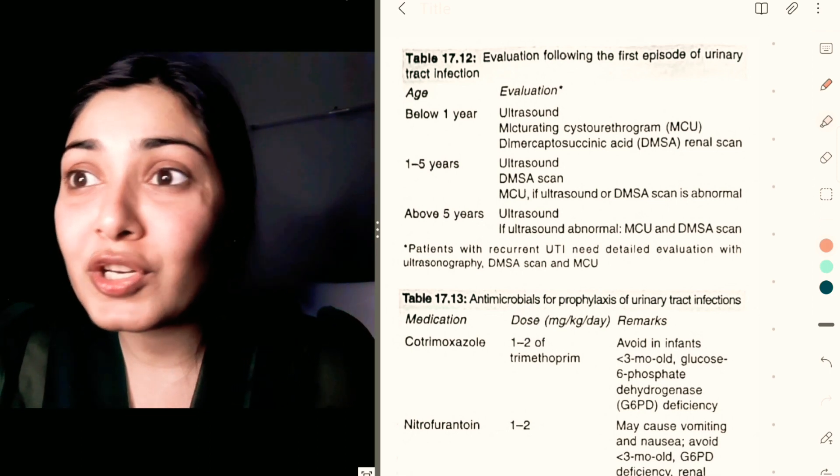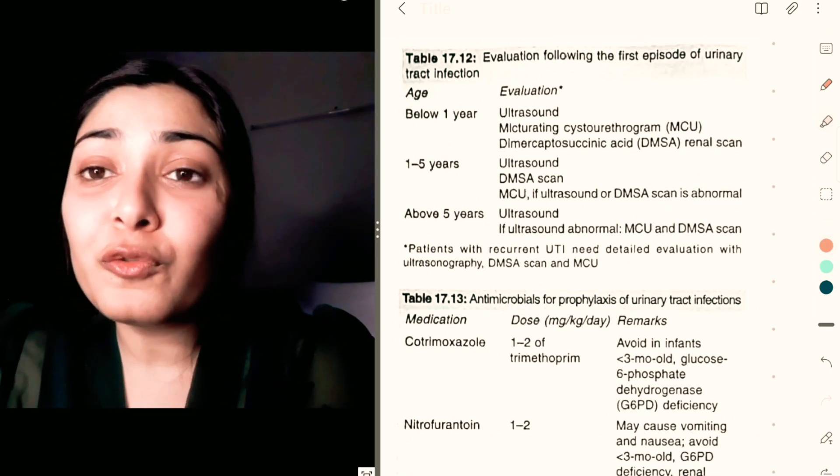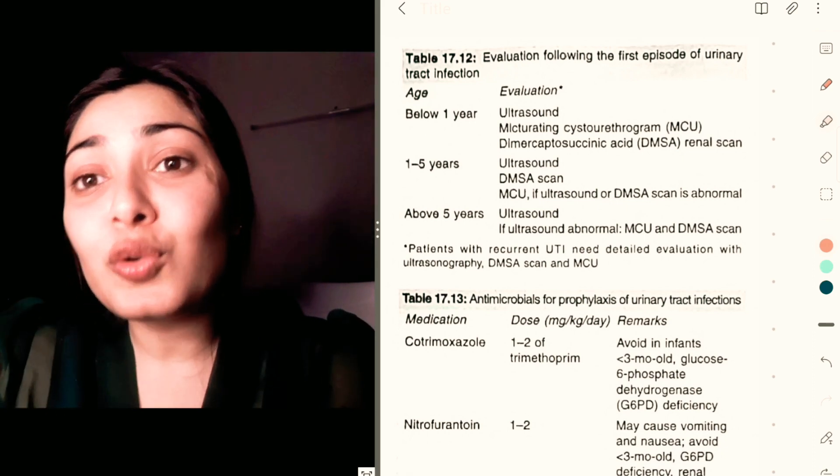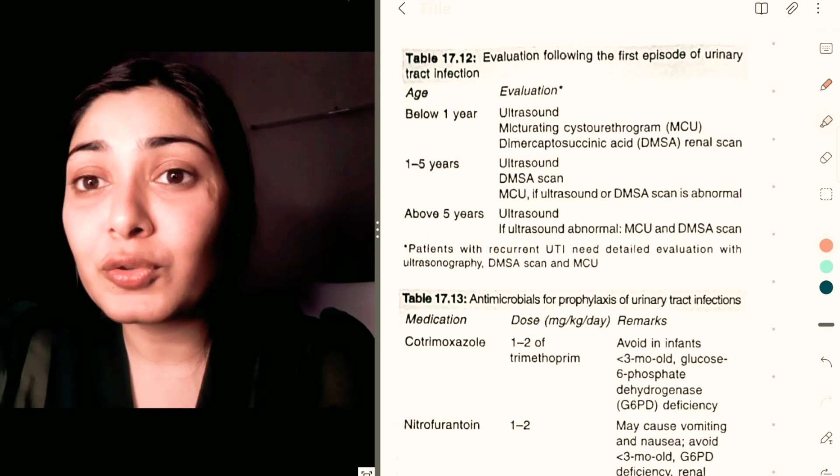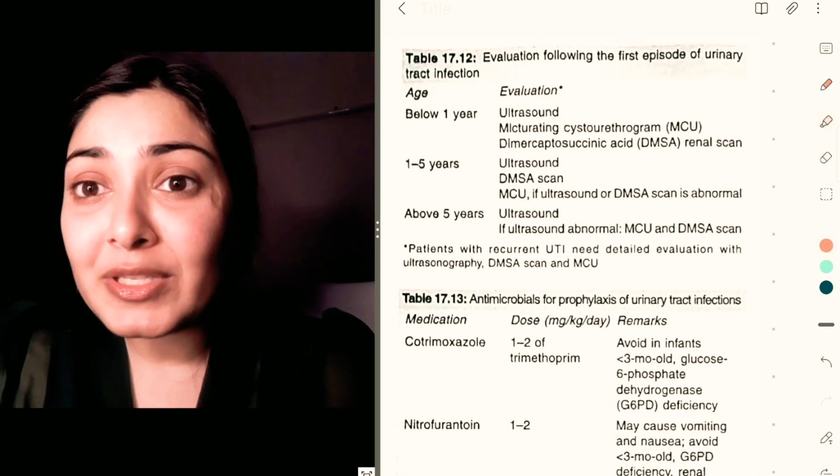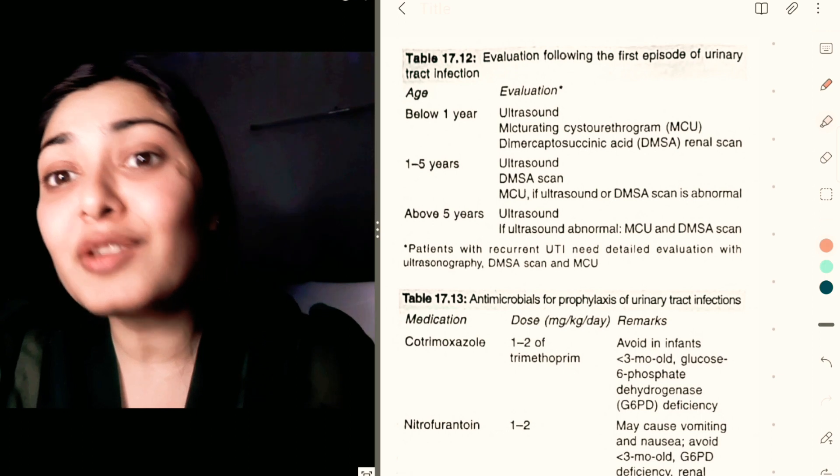Below one year of child, you do all three investigations: you go for ultrasound, you go for MCU (micturating cystourethrogram), and you go for DMSA scan. As the child grows—1 to 5 years—you do ultrasound, ultrasonography, you go for DMSA scan, and if any of them is abnormal then you go for MCU, that is an invasive one.